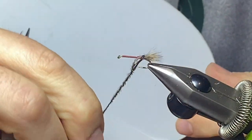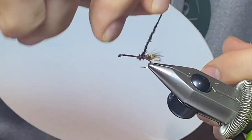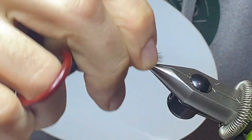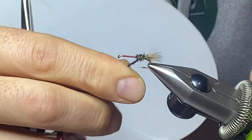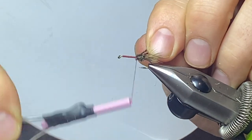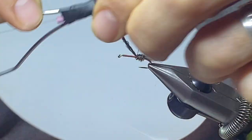It starts out loose, but you get a real nice butt section to it. This is a loud fly, and when you got a loud fly, it's okay to have a whole bunch of peacock. Trout really like peacock.